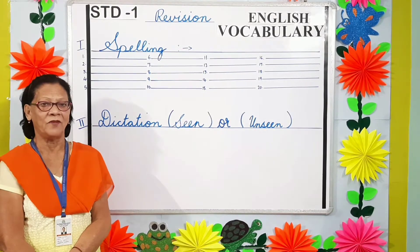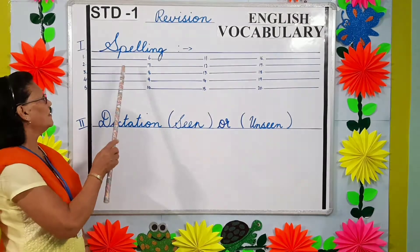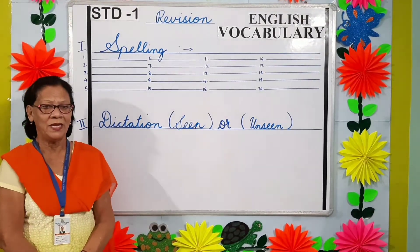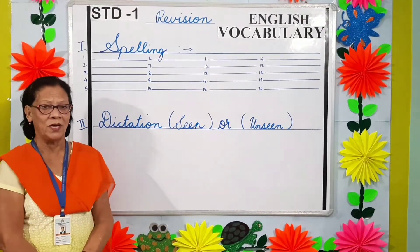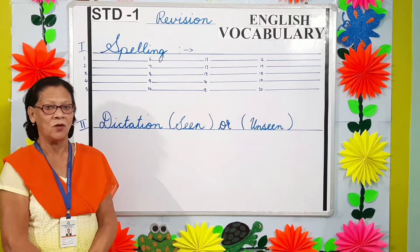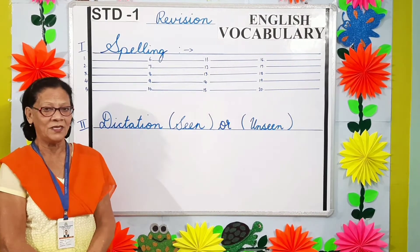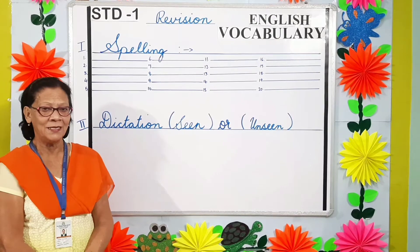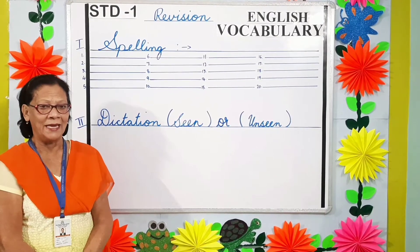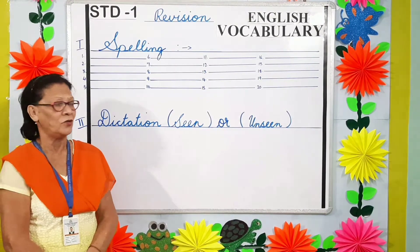Let's begin with the first question: spelling. You will be given 20 words. Each word will be called out thrice. First you will listen, second time you will write, and in the third time you will check.